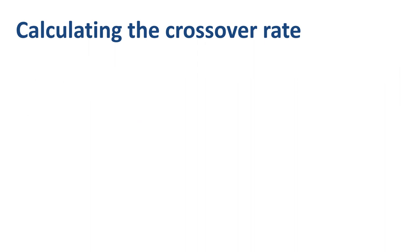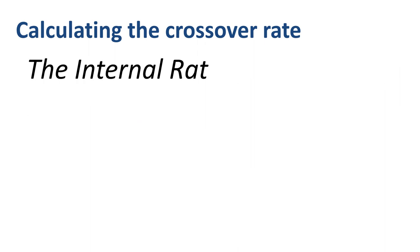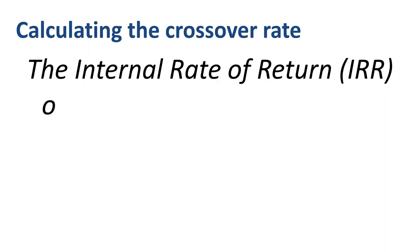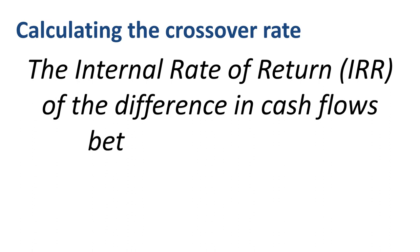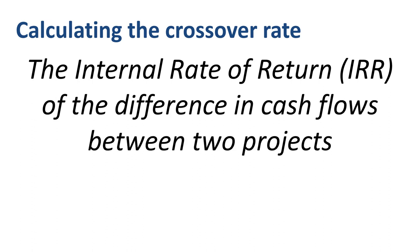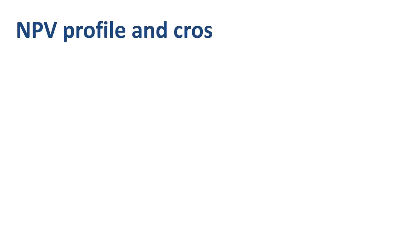So how do you calculate the crossover rate? You simply need to find the internal rate of return — IRR — of the difference in cash flows between two projects. A common way to see the crossover rate in a bigger perspective is to build an NPV profile, which shows the sensitivity of a project's NPV for different discount rates.